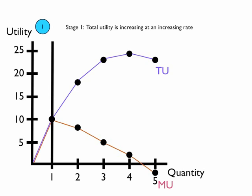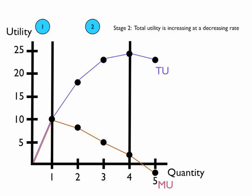Stage 1: Total utility is increasing at an increasing rate. Both total utility and marginal utility are increasing. This is seen with the consumption of the first slice of pizza. Stage 2: Total utility is increasing at a decreasing rate. Total utility is increasing, but marginal utility is decreasing — also known as diminishing marginal utility. This is seen with the consumption of the second to fourth slices of pizza.